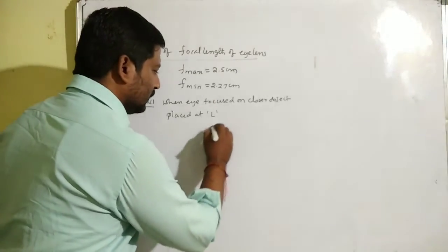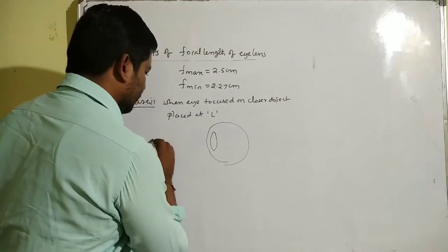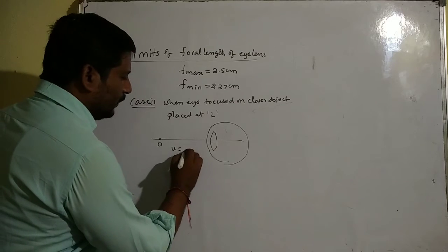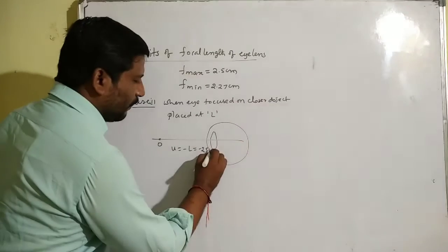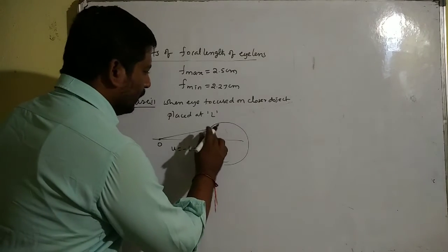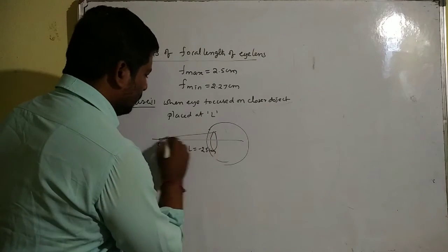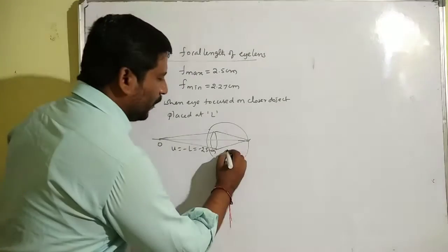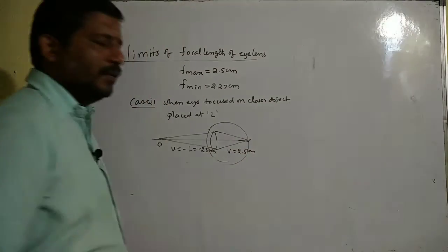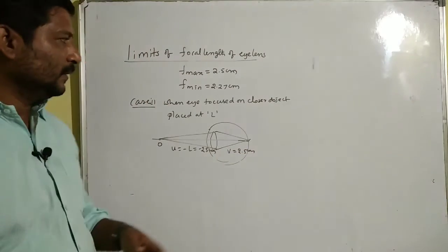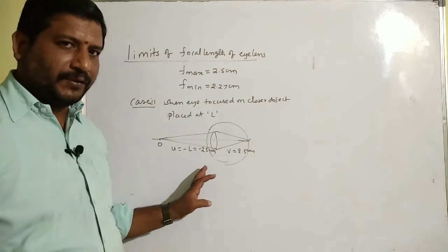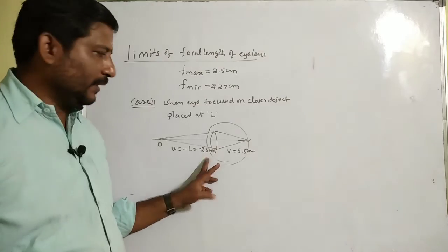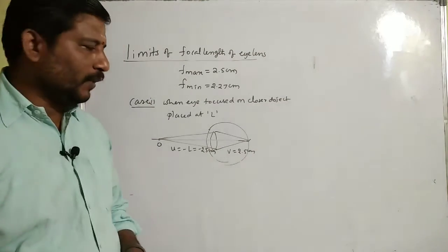The closer object is placed at the least distance of distinct vision. This is the eye lens. The object is placed at u = minus 25 cm, and the eye lens forms the image on the retina at 2.5 cm distance. So, the object distance is 25 cm and the image distance is 2.5 cm.